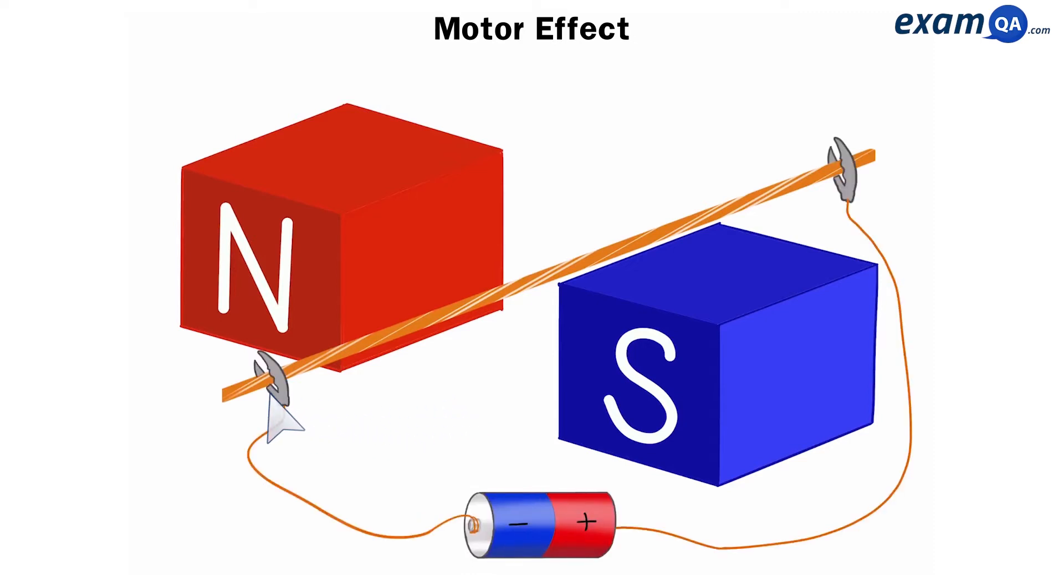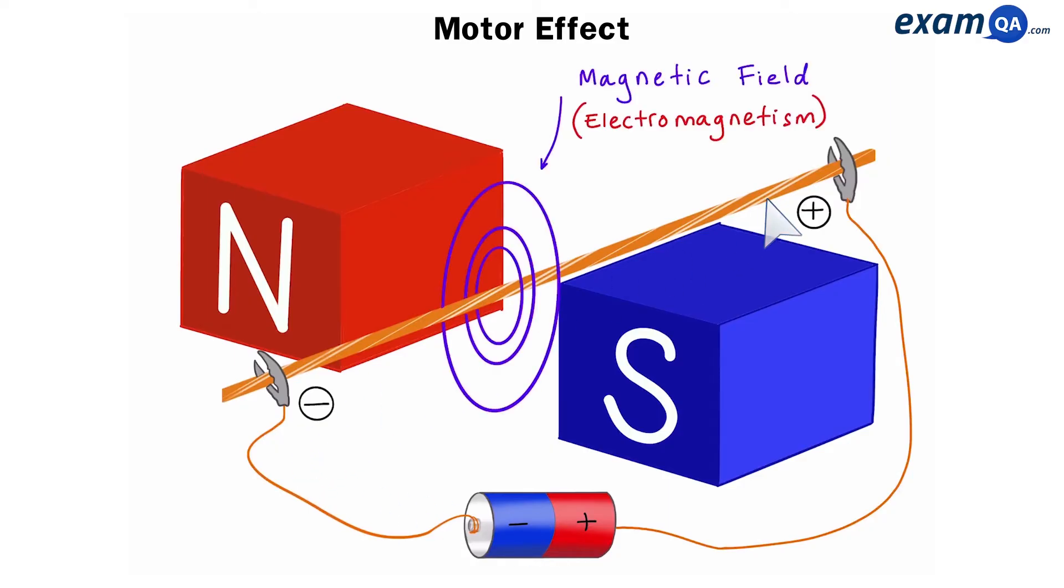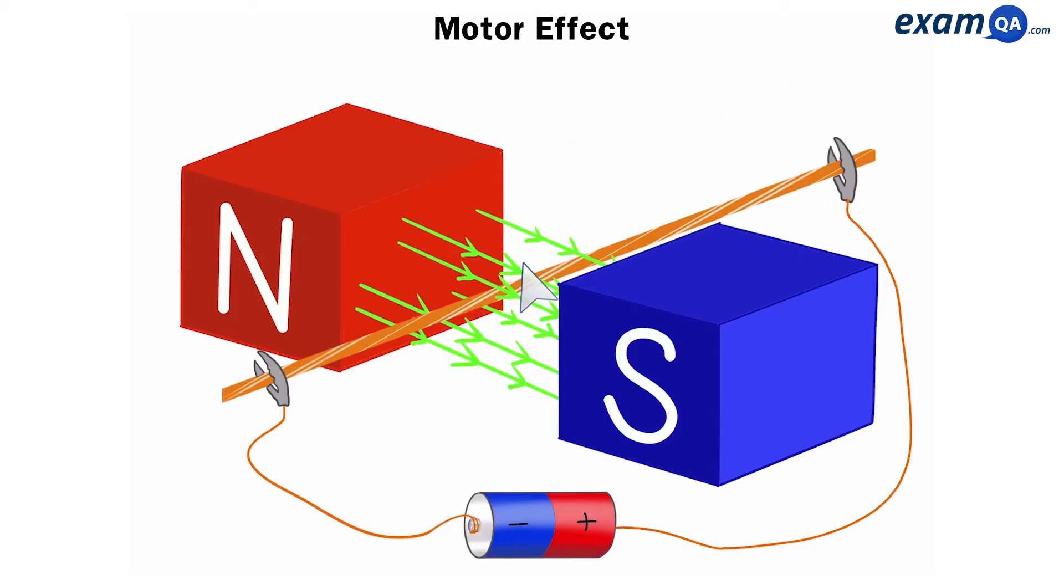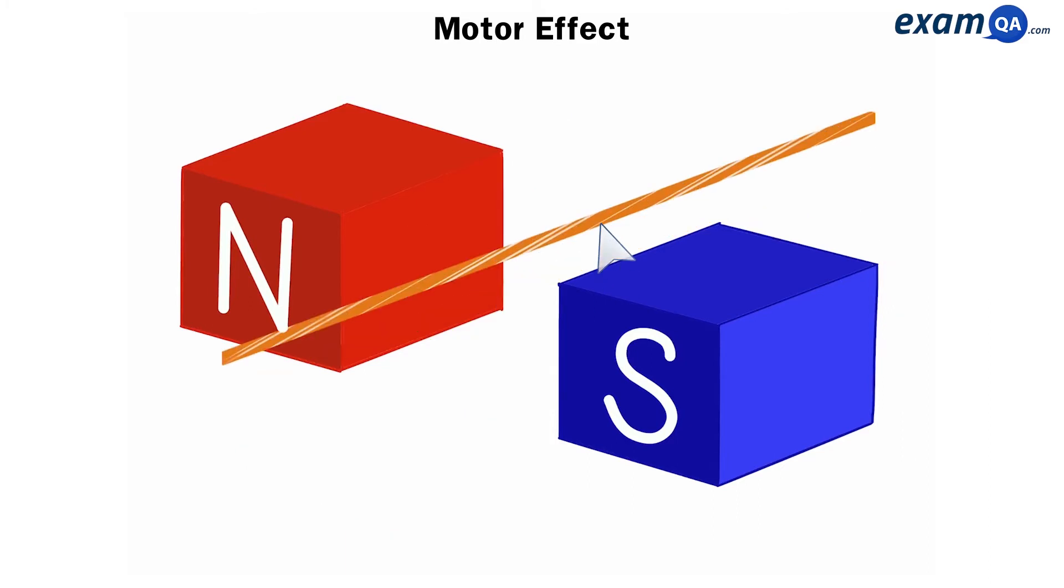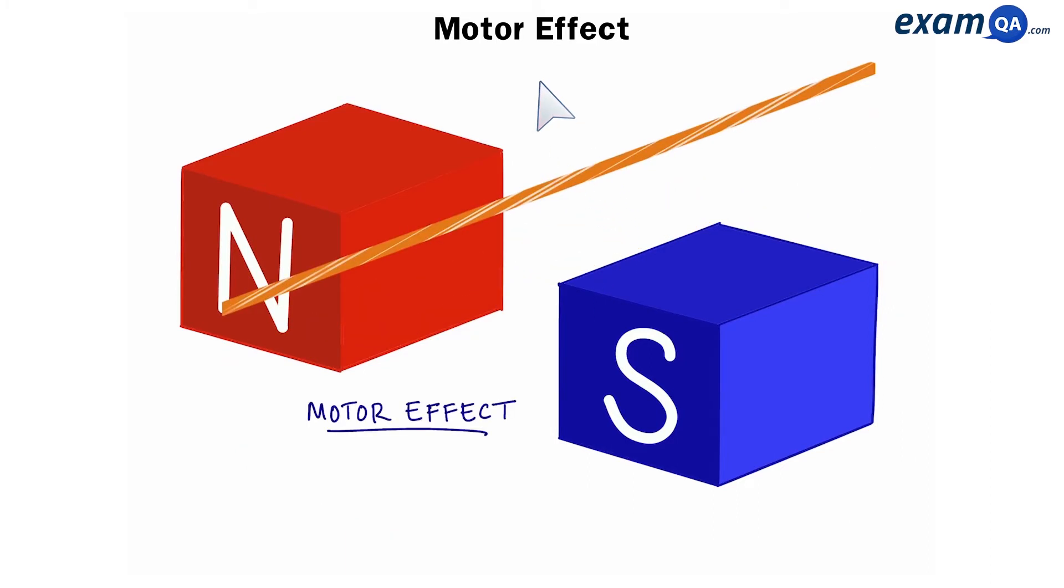What about if I connected that wire with a cell? So now there's a current flowing through the wire. We know that this will create a magnetic field in the wire because of electromagnetism. Now, we have the magnetic field of the magnets and the magnetic field of the wire interacting. There's going to be an interaction between these two fields and that will create a force on the wire. And as a result, the wire will begin to move. This is called the motor effect.